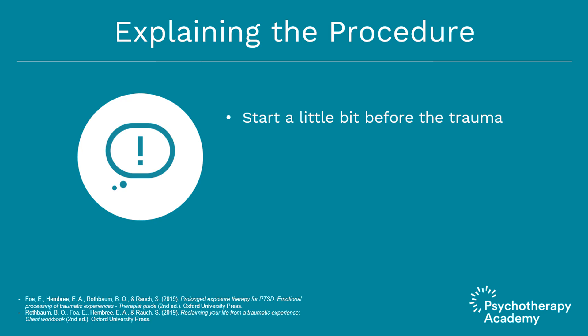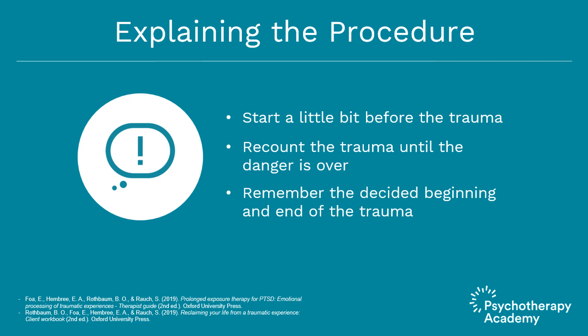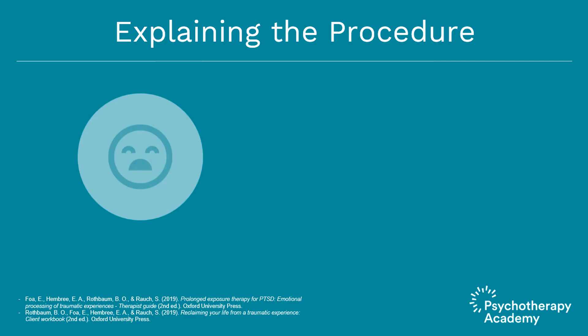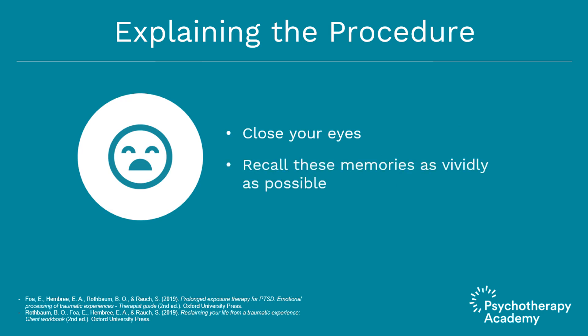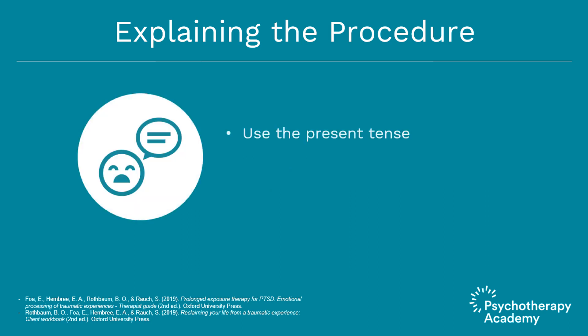Begin the recounting at a point at least a minute or two before the situation starts getting bad or frightening. Then go through recounting the trauma up until the danger is over, you feel safe again, or you're out of the situation. Remind the patient of the beginning and end points decided upon, and adjust slightly if she asks. It's best to close your eyes while doing this so you won't be distracted. Recall the memories as vividly as possible and picture them in your mind's eye — we call this revisiting the trauma memory. Describe the experience in the present tense as if it were happening now, right here.